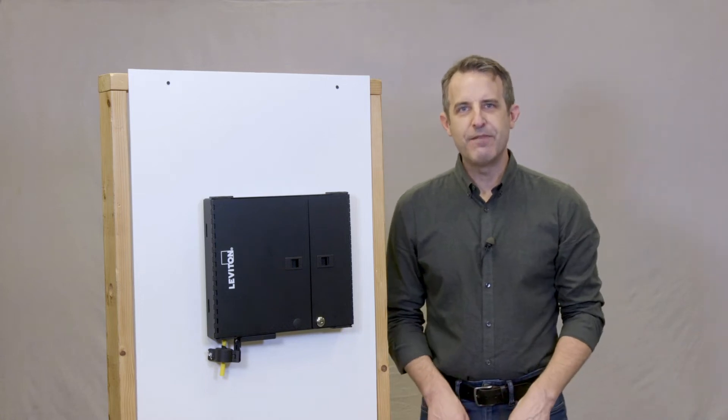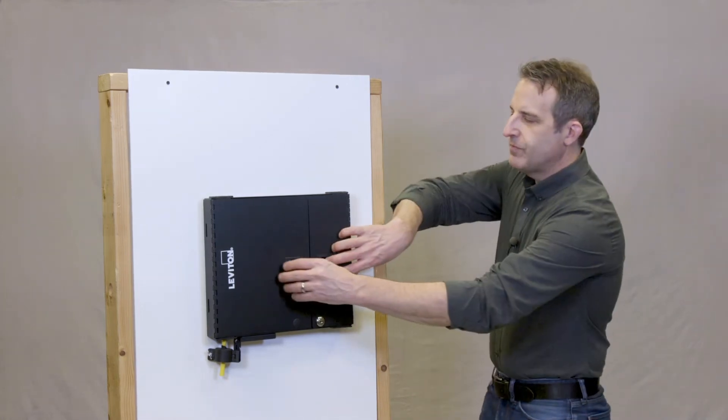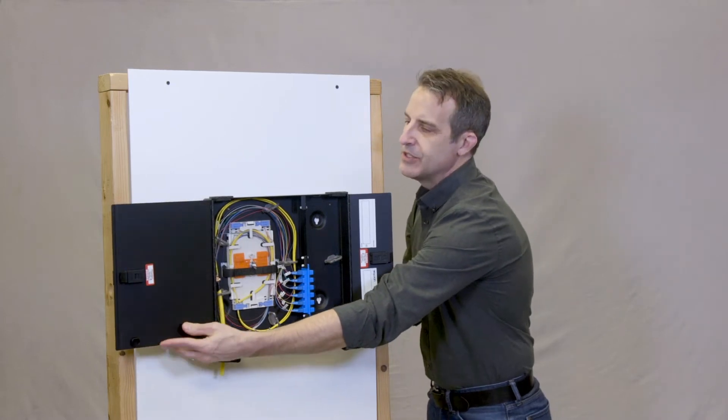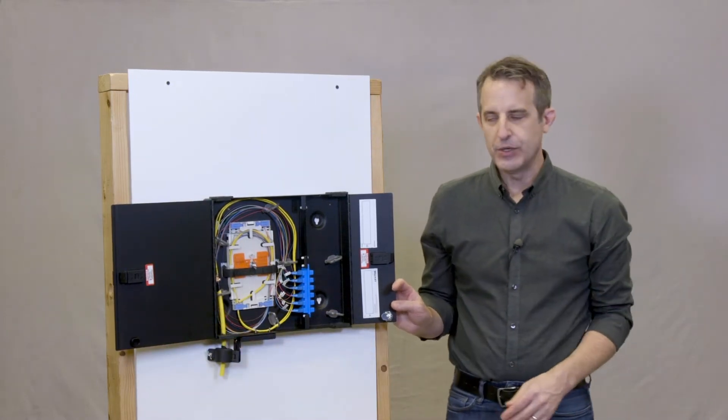This is the Optex SDX fiber wall mount enclosure. This low profile enclosure is manufactured from 16 gauge steel so it's got a really good feel and durability to it.